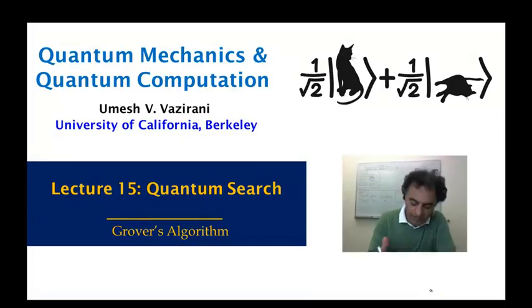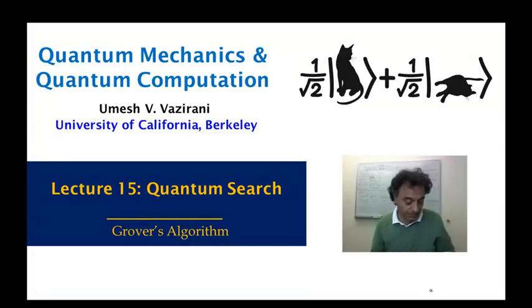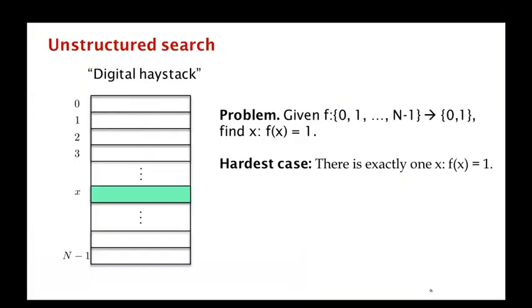In this video we are going to talk about Grover's algorithm. Remember the problem we are trying to solve: we are given a table with N entries, and we think of N as 2 to the little n.